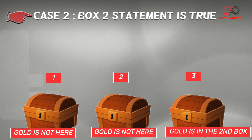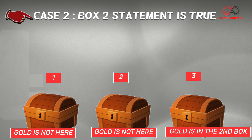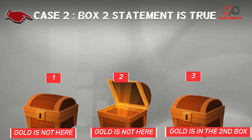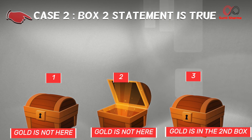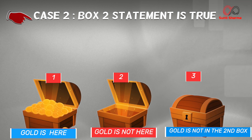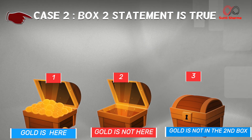Case 2: The statement on box 2 is true, which means statements 1 and 3 are false. Since statement 2 is true, gold is not in box 2. Since statement 1 — gold is not here — is false, the exact opposite has to be true, which means gold is in box 1. Also, statement 3 — that gold is in box 2 — is false, meaning box 2 does not have the gold, which also matches the second statement. Therefore gold has to be in box 1.